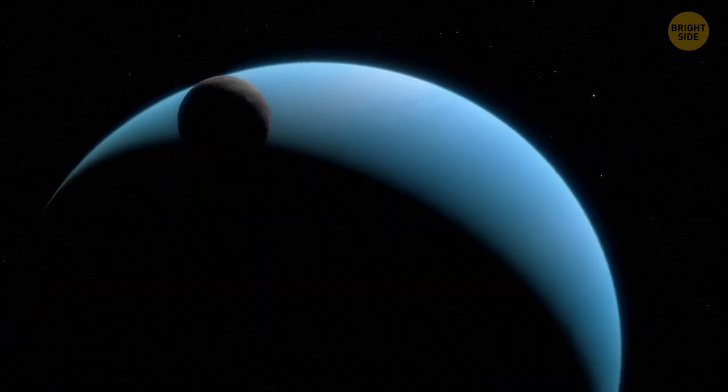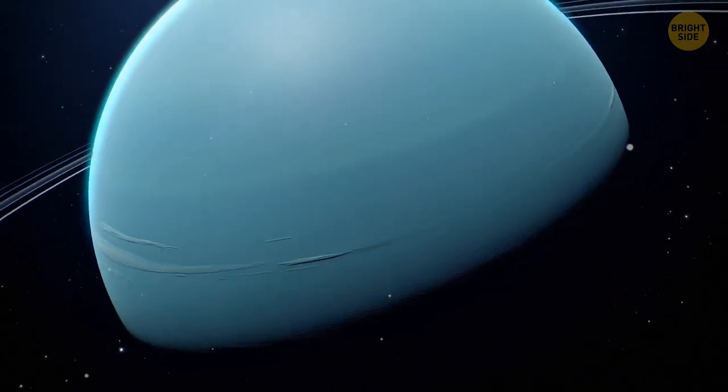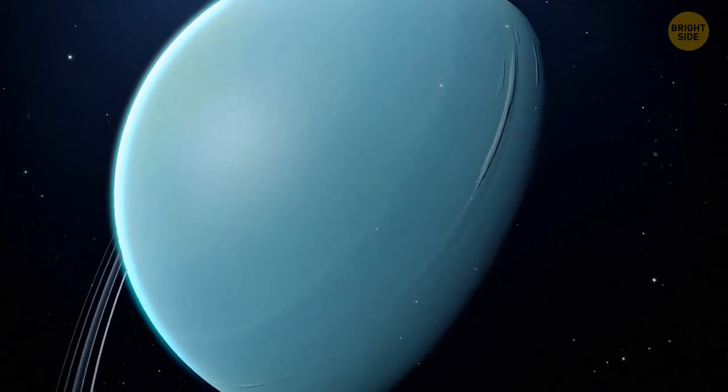Kepler-22b can rotate around its star on its side, like, for example, Uranus. What? Didn't you know Uranus is actually lying on its side?